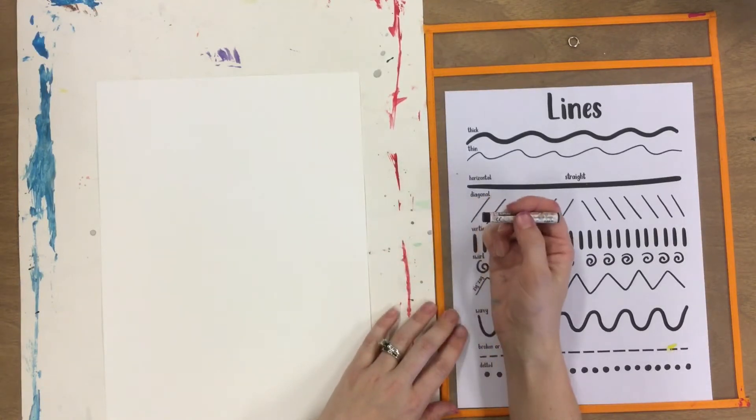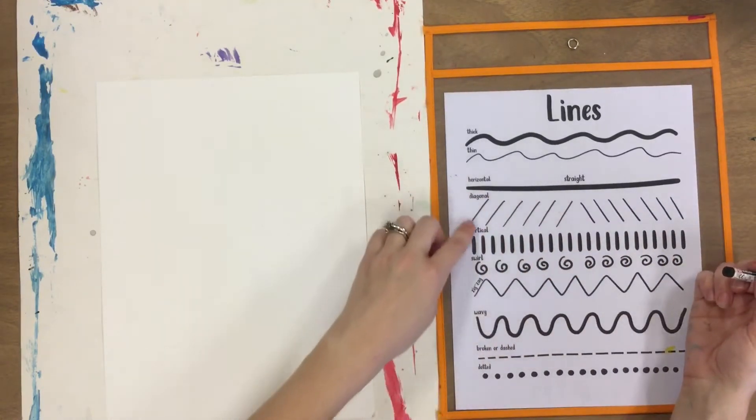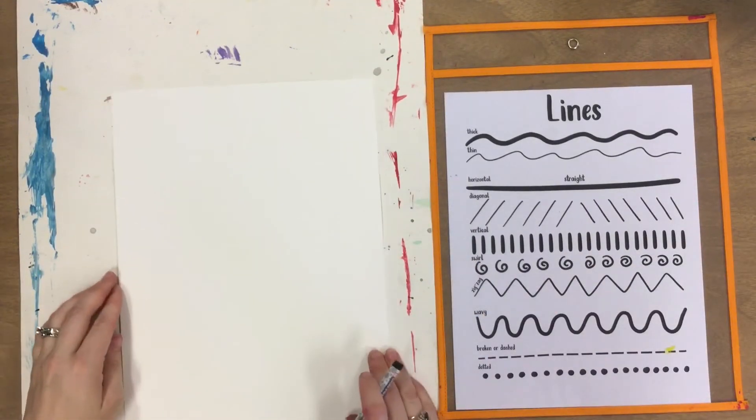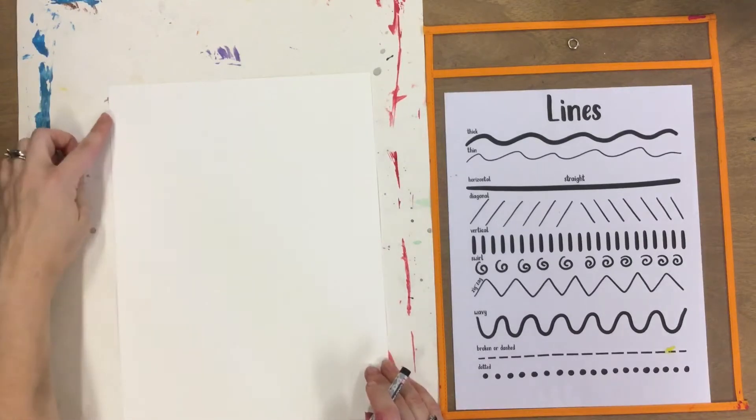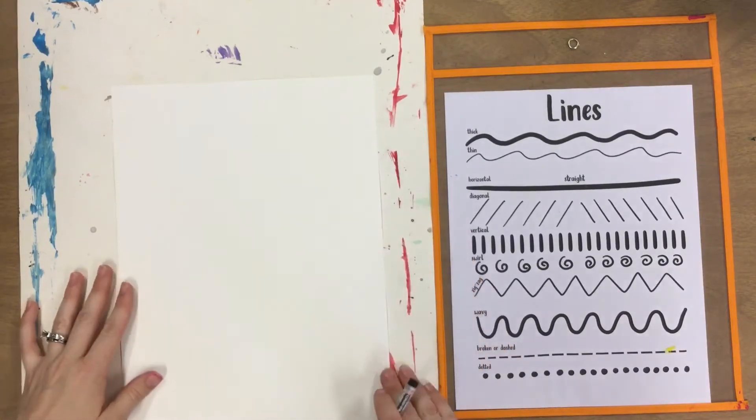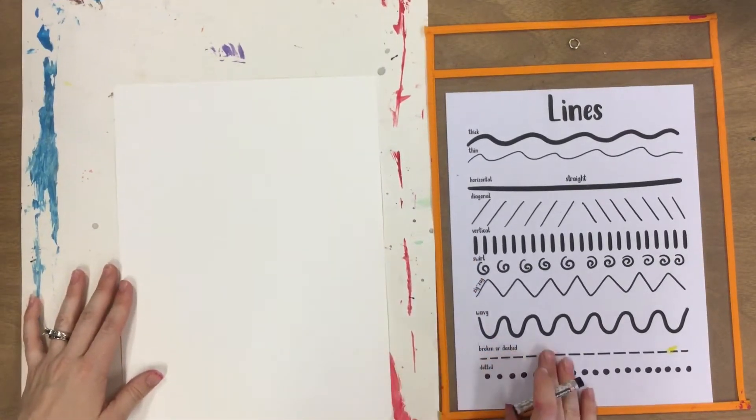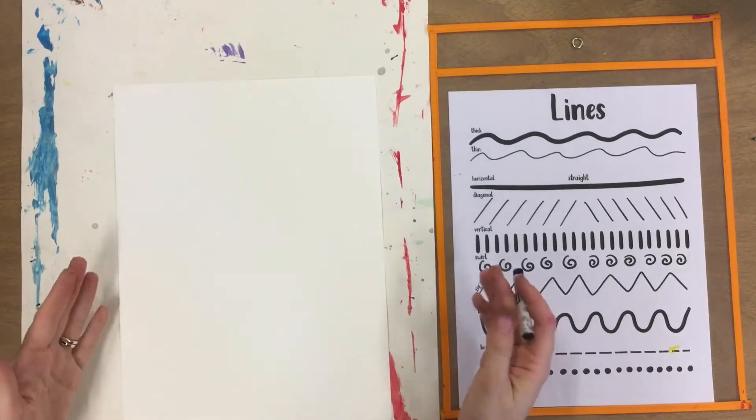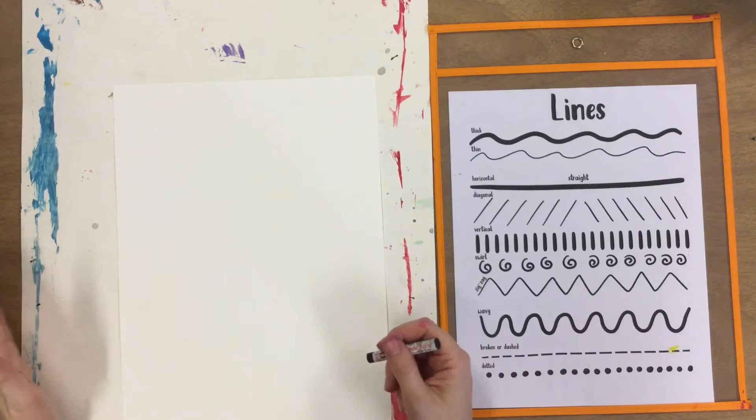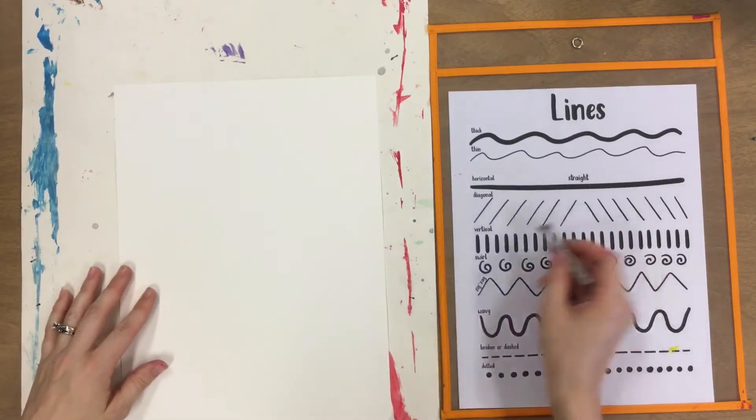We want to create different types of lines, and we are going to do what I call taking our line for a walk. So we're going to start our line on one side of the paper and take it for a walk the whole way across. What we will do is we will be choosing one line at a time to take for a walk.